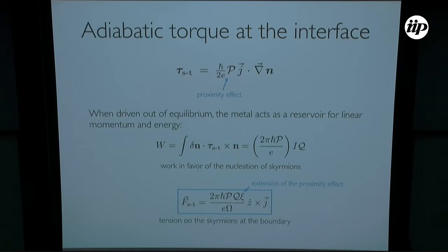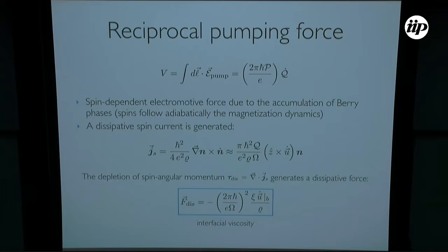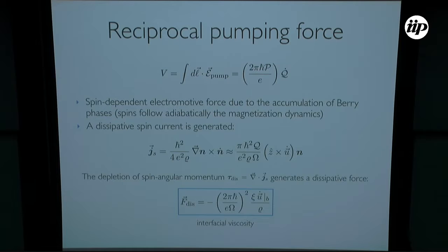We also have the reciprocal effect, which generates a pumping force in the metal and, in particular, a voltage signal that can be written as the rate of annihilation of skyrmion charge. This comes from spin-dependent forces arising due to the accumulation of Berry phases by the itinerant spins following adiabatically the magnetization dynamics. Simultaneously, a spin current is generated in the system regardless of the proximity effect strength, representing the transfer of spin angular momentum from the magnet to the metal, subsequently dissipated in the metal. In the language of collective variables, this introduces interfacial dissipative forces that break the macroscopic time-reversal symmetry of the Landau-Lifshitz dynamics.